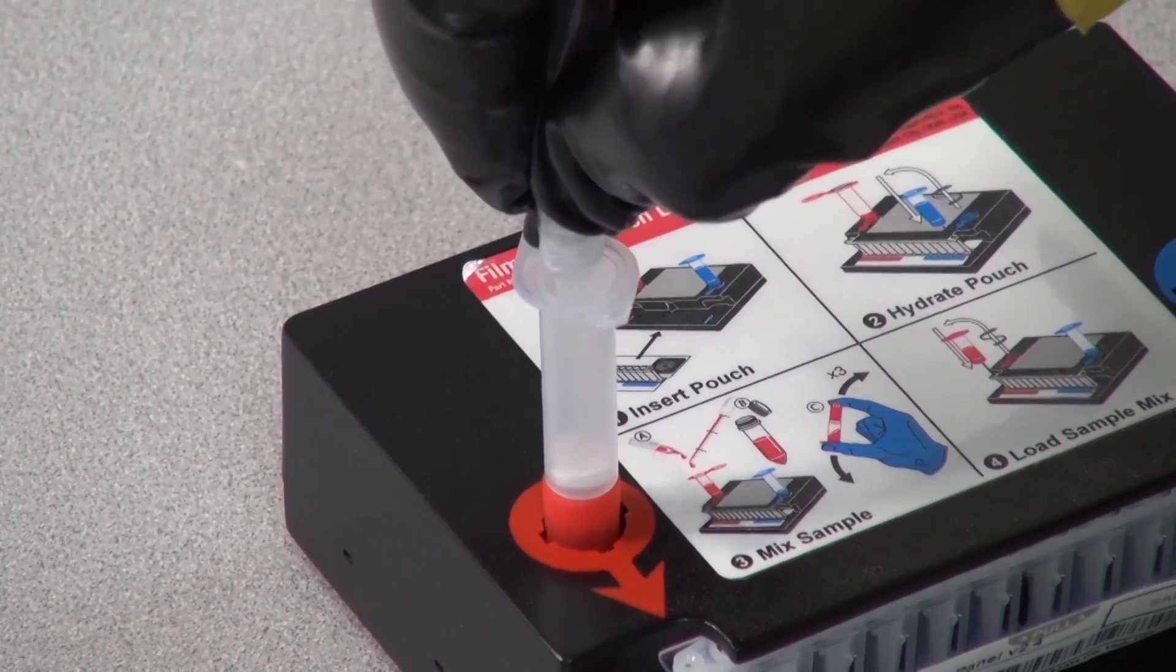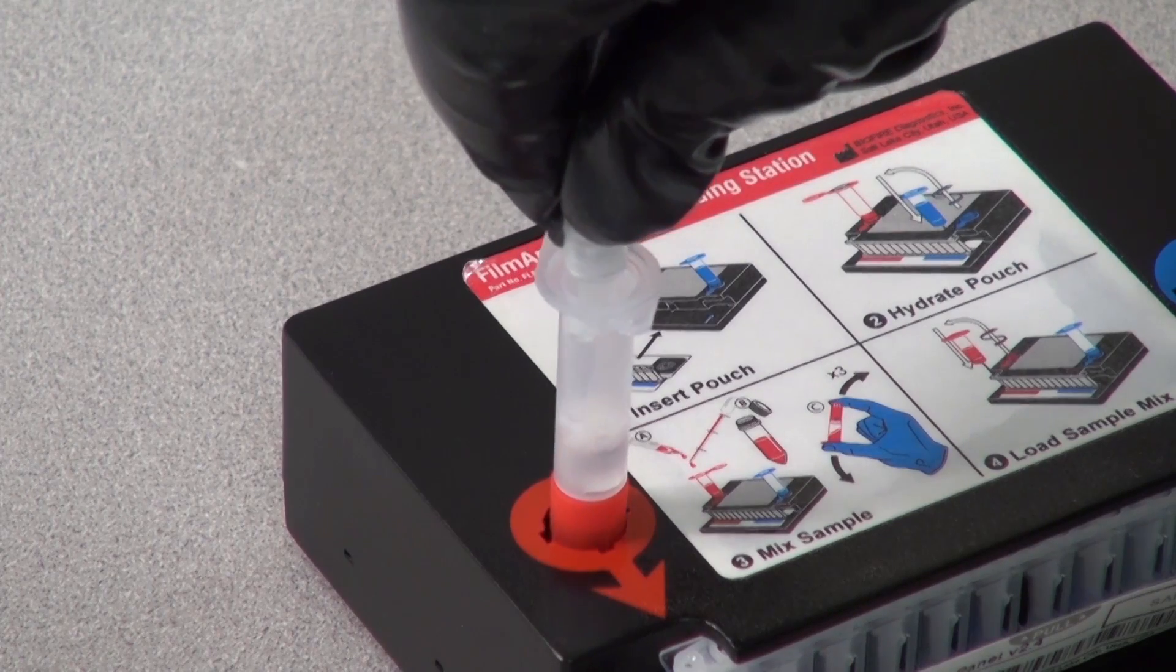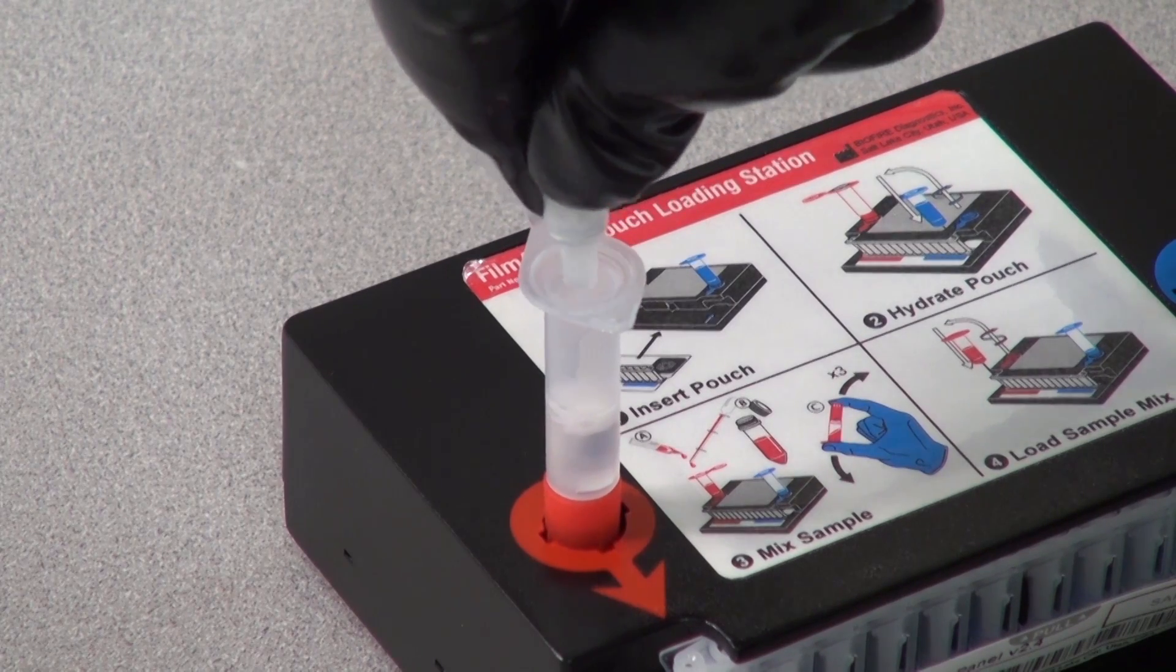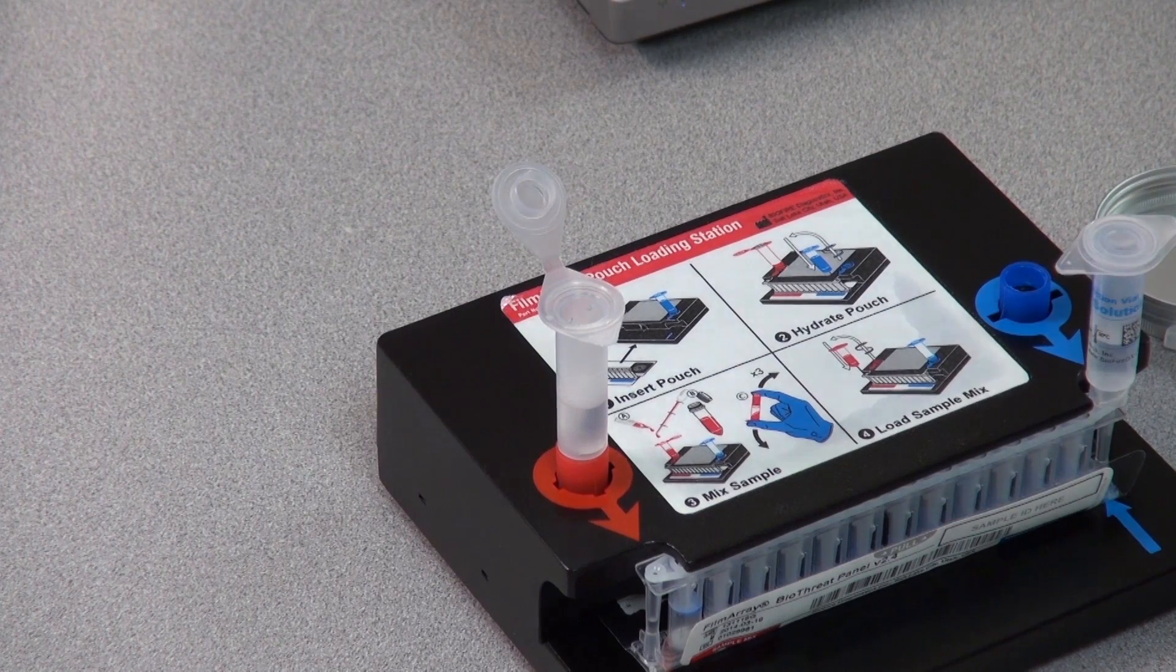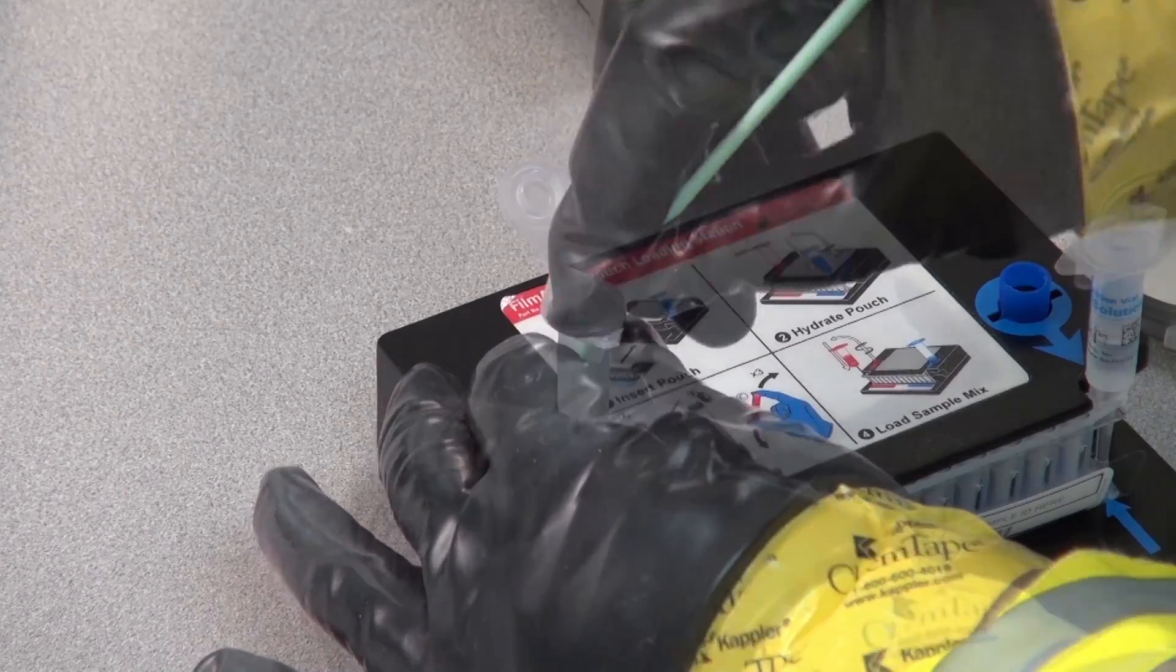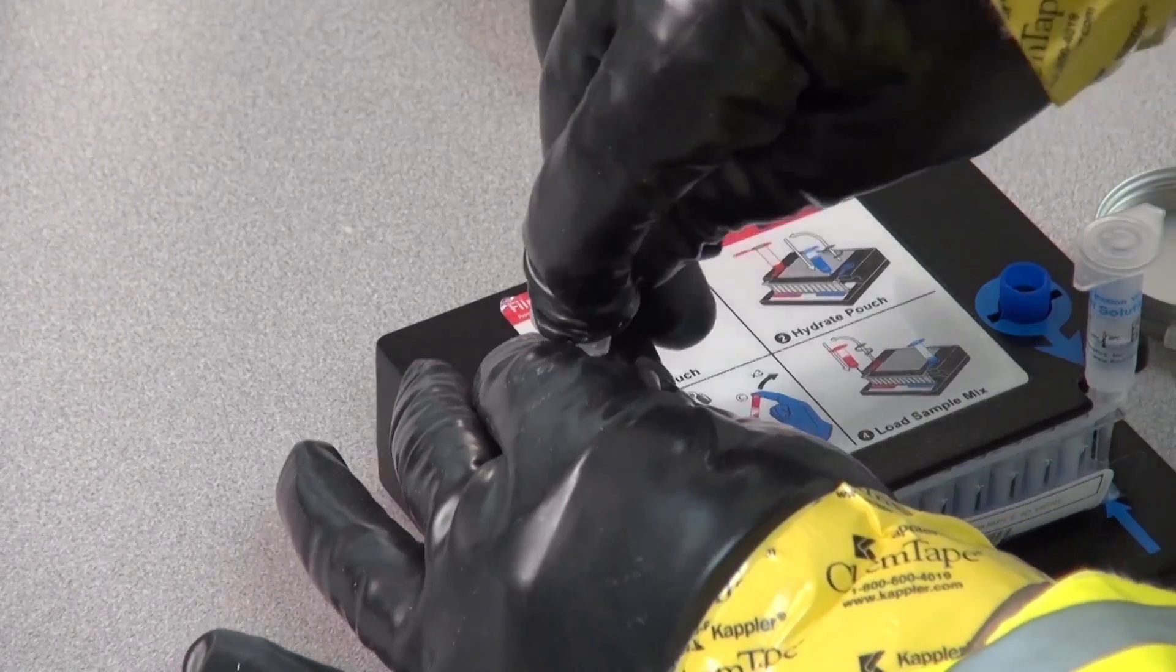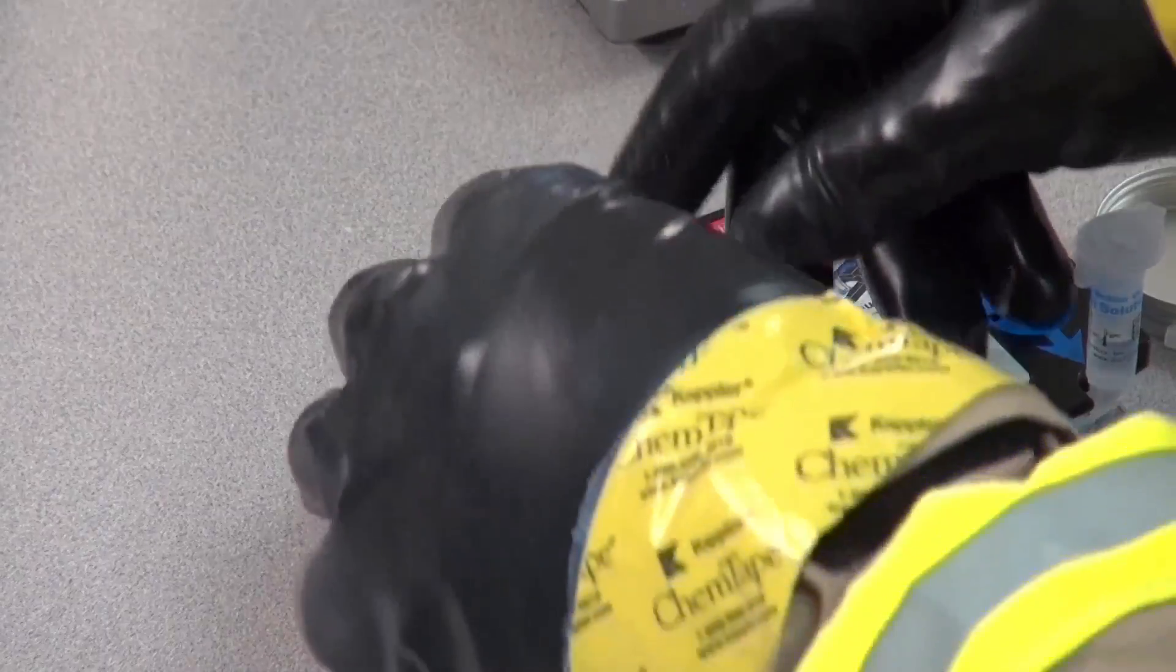Next, collect a sample. Squeeze the buffer into the red injection vial on the loading station. Avoid making bubbles. Use a swab to collect a sample, but don't overload it. Drop the swab in the red vial. Cap and remove the red vial, inverting it three times before returning it to the loading station.